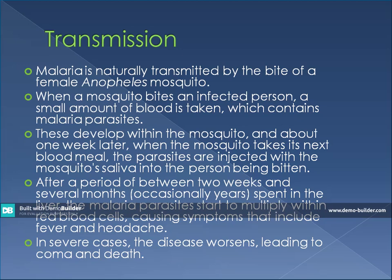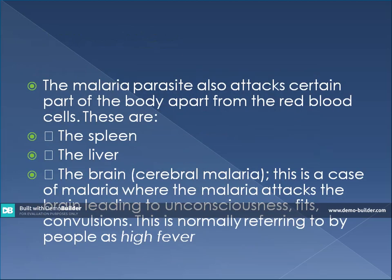After a period of between two weeks — and depending on the type of parasite, it can take several months or years before symptoms are shown — the malaria parasite will start to multiply within the red blood cells, causing symptoms that include fever and headache. In severe cases, the disease may worsen leading to coma and death. The malaria parasites also attack other parts of the body apart from the red blood cells, which is what causes anemia. They can also attack the spleen, the liver, and the brain, causing cerebral malaria.